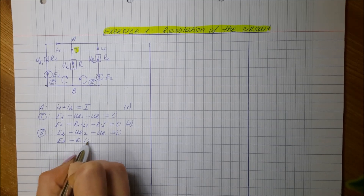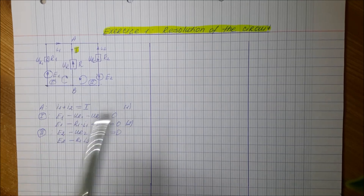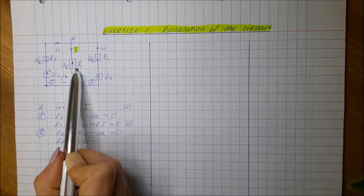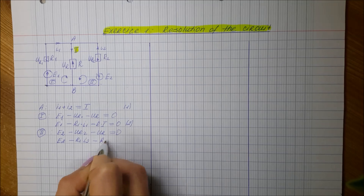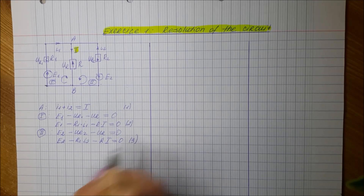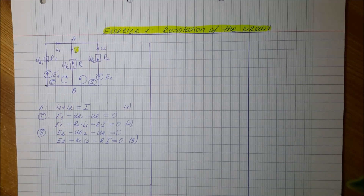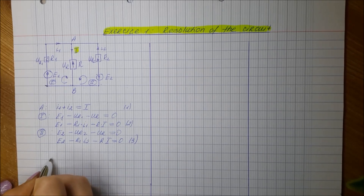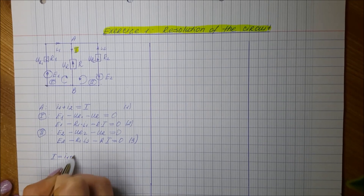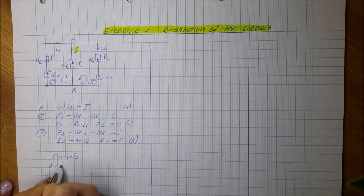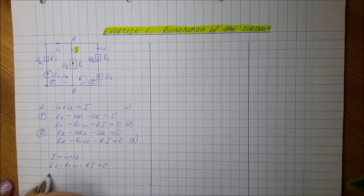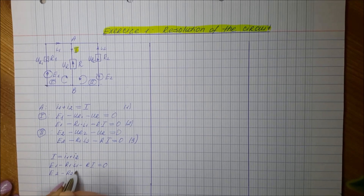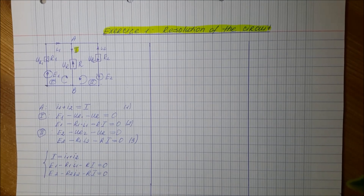Applying Ohm's law for resistor R2, UR2 equals R2 times I2, and UR equals R times I. So the second loop equation becomes: E2 minus R2·I2 minus R·I equals 0. Combined with the current law I1 plus I2 equals I and the first loop equation E1 minus R1·I1 minus R·I equals 0, we have a system of three linear equations.